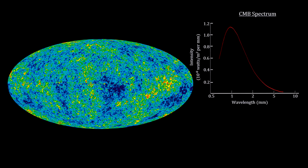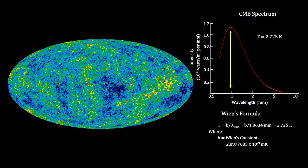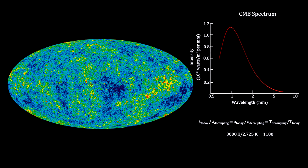The key observation is that the light fits the blackbody radiation curve perfectly. This gives us the temperature of the radiation today — it is 2.725 degrees. We know that at decoupling it was 3,000 degrees.